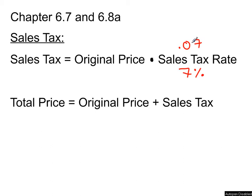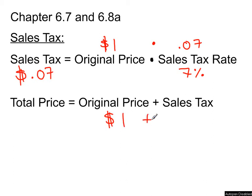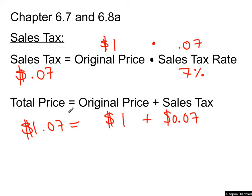Let's say we go to the dollar store and buy something that costs one dollar. The original price is one dollar. We multiply one dollar by 0.07 and our sales tax is seven cents — seven hundredths of a dollar. To find the total price, we take the original price of one dollar plus the sales tax of 0.07, and one plus 0.07 gives us one dollar and seven cents.